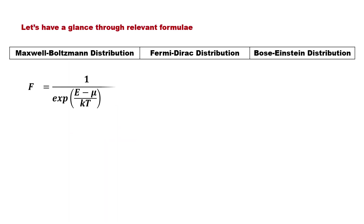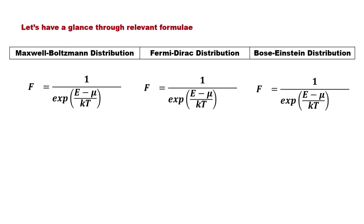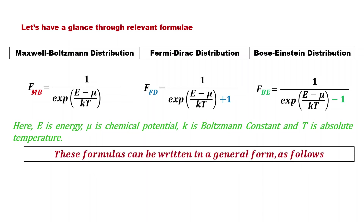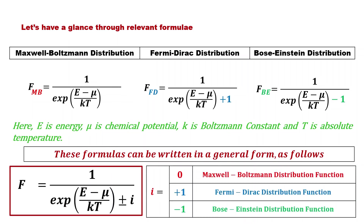Let's have a glance through the relevant formulas. Here E is energy, mu is chemical potential, k is the Boltzmann constant, and T is absolute temperature. These formulas can be written in a general form. Here i equal to 0 corresponds to the Maxwell-Boltzmann distribution function, i equal to plus 1 corresponds to the Fermi-Dirac distribution function, and i equal to minus 1 corresponds to the Bose-Einstein distribution function.